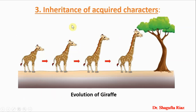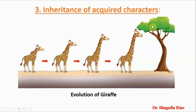For the third postulate — inheritance of acquired characters — Lamarck gave the example of the evolution of the giraffe. The present-day giraffe has a very long neck, but the ancestors of the giraffe were horse-like in size and neck length. When they migrated to Africa, they were forced to feed upon taller trees, and this need gradually elongated their necks to reach their food — resulting in the longer neck of the present-day giraffe.